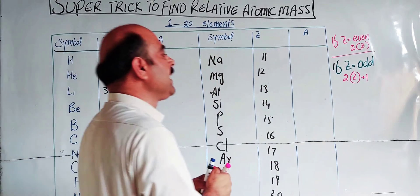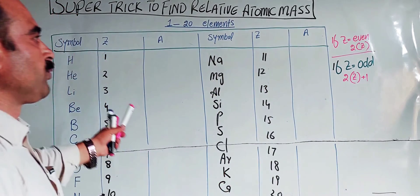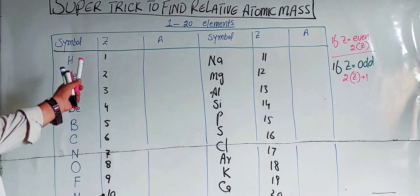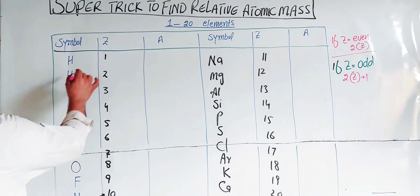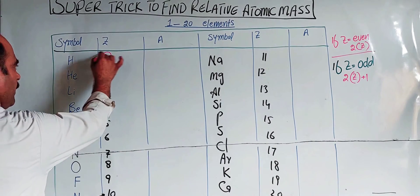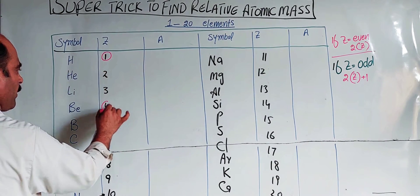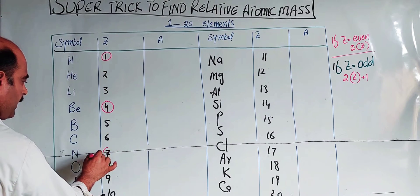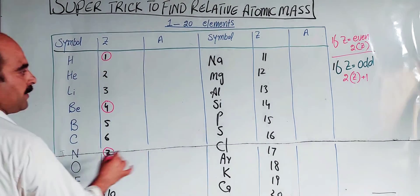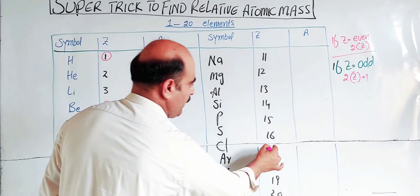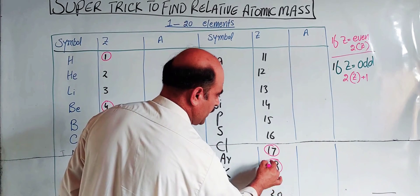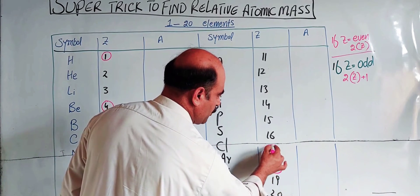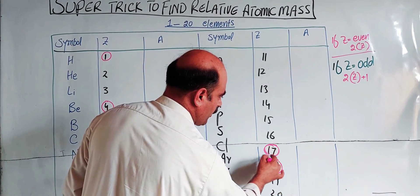However, there are exceptions to this rule. The exceptions are atomic numbers 1, 4, 7, 17, and 18. For these exceptions, the opposite rule applies. These are the only exceptions you need to remember.